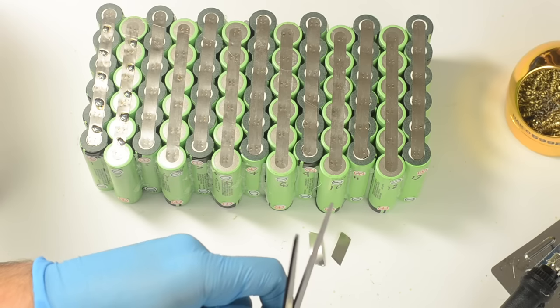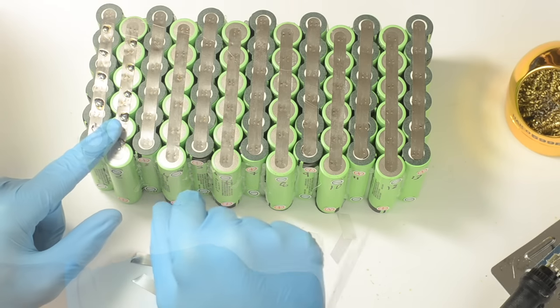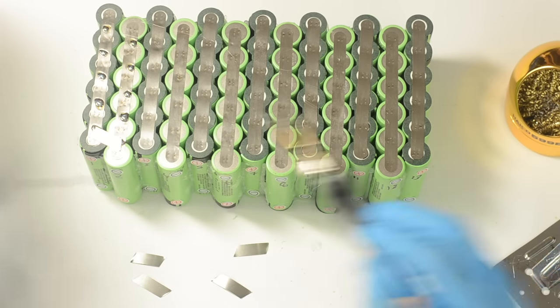And then I'll cut out my nickel strip to make some strips that are long enough to reach between two sets of cells. And now I'm going to solder the series connections between the positive end of the first module and the negative end of the second module.